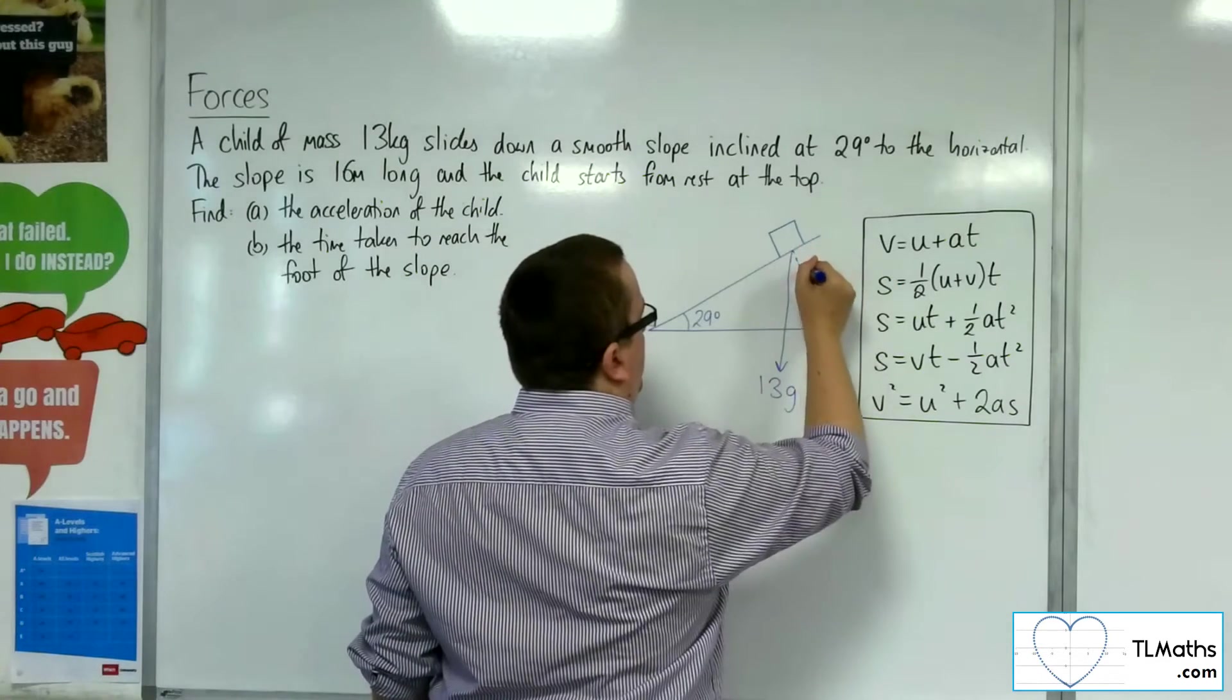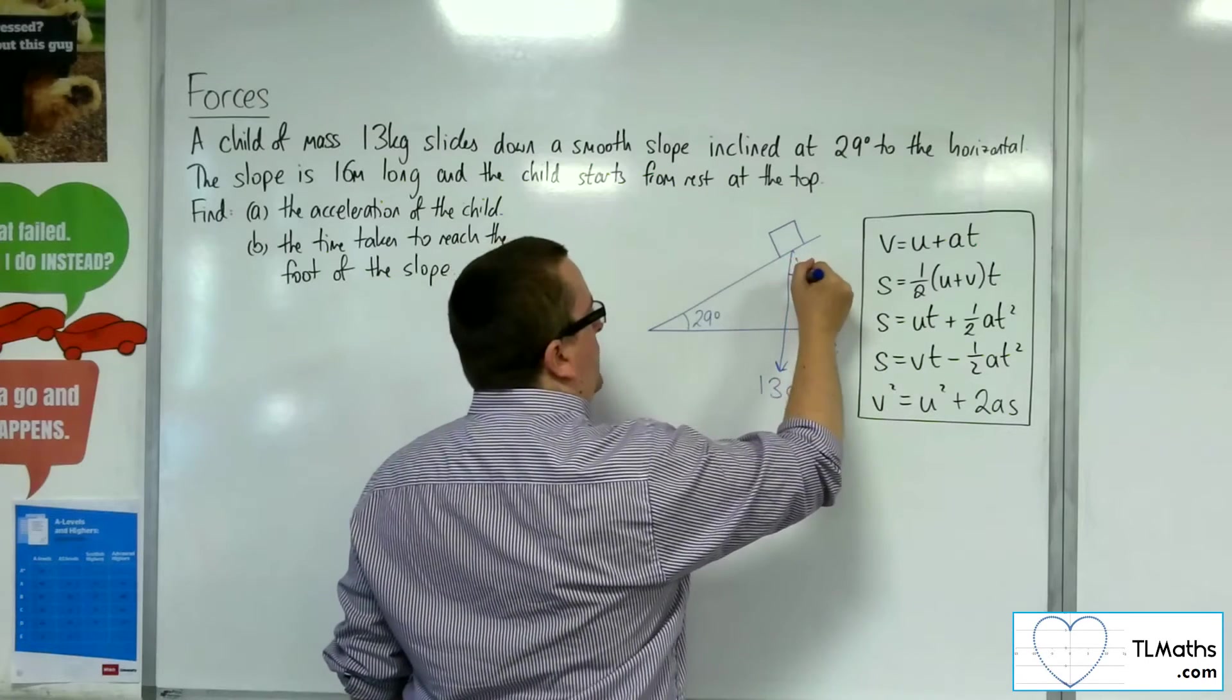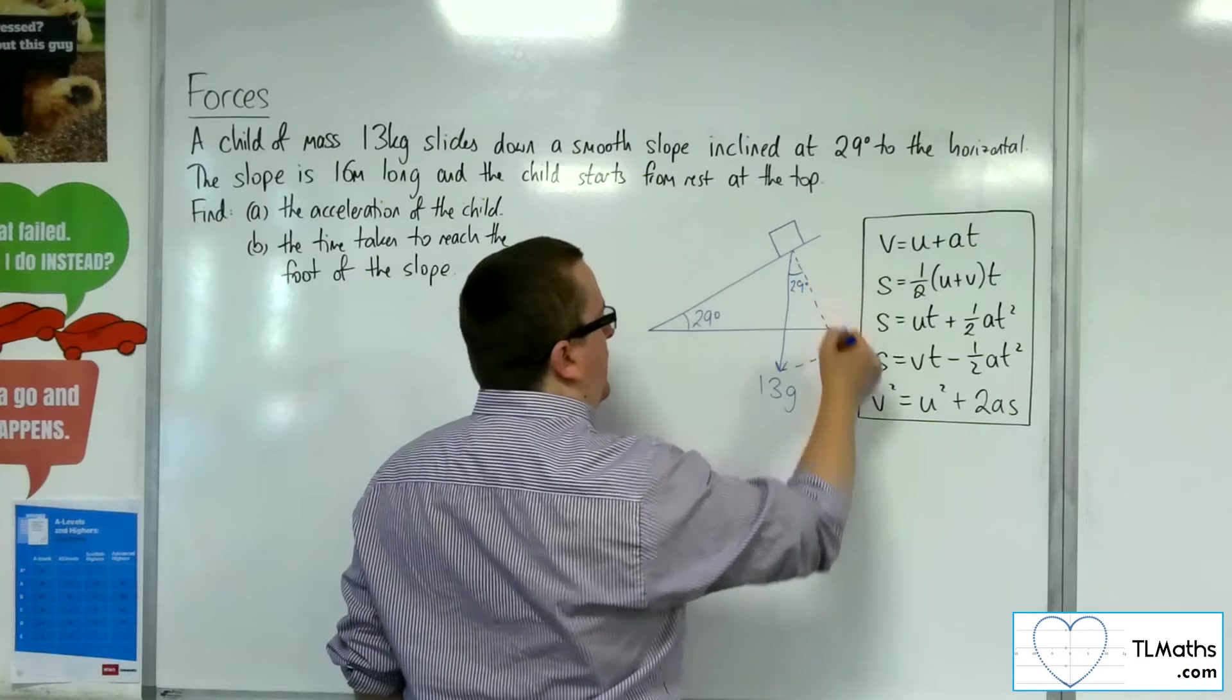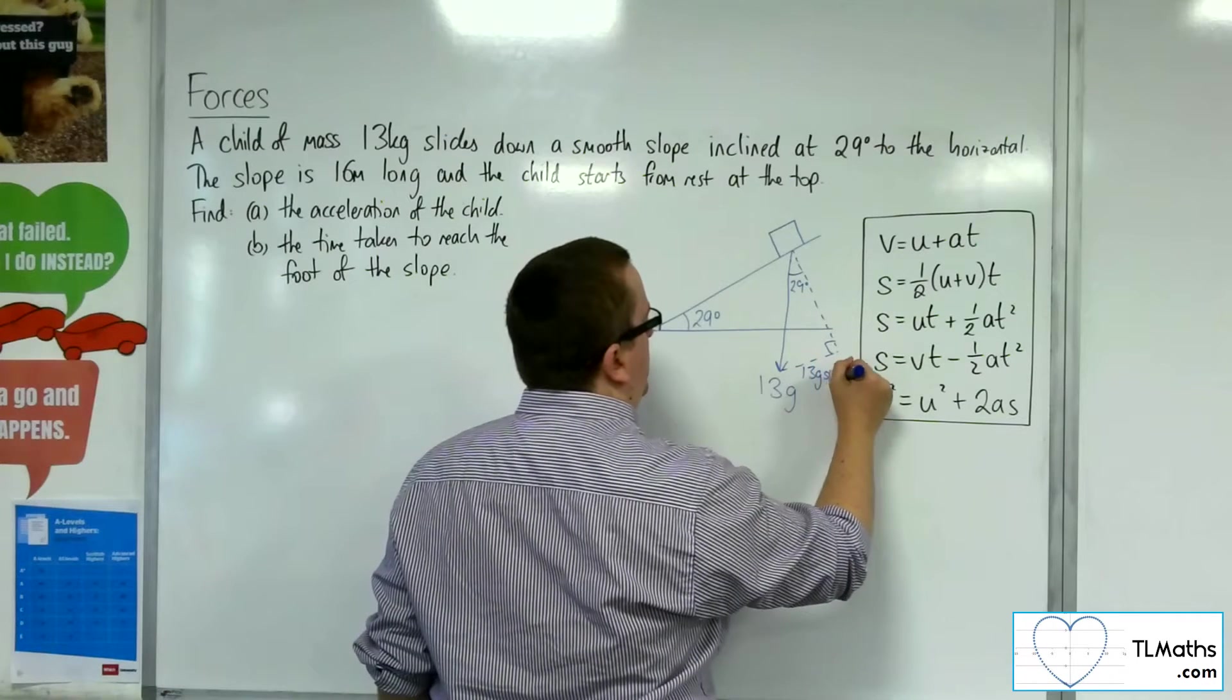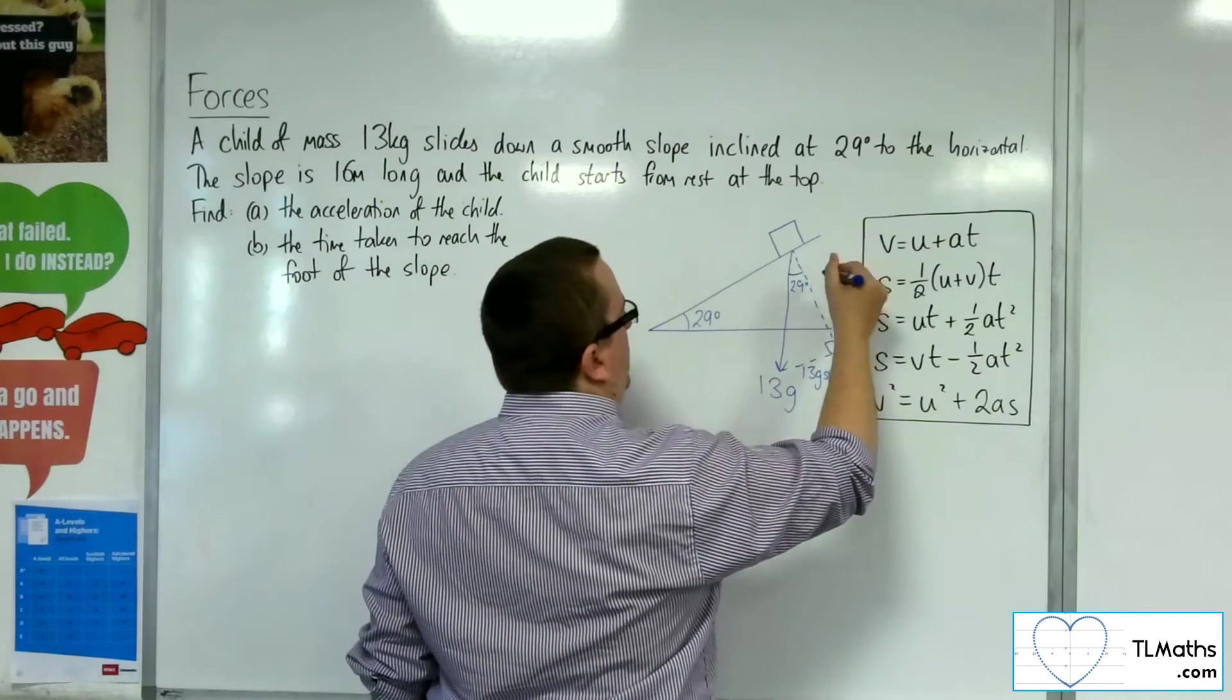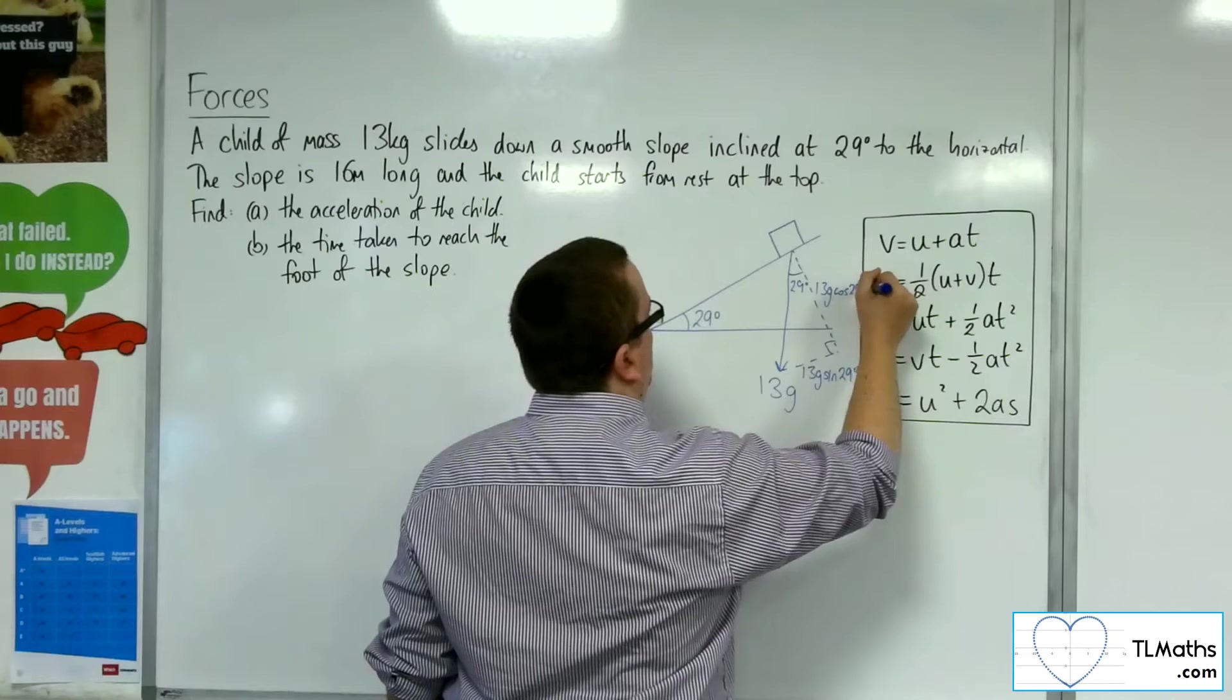And I'm going to divide that up into its component parts. So this angle is 29 degrees. So we've got the opposite side will be 13g sine 29, and the adjacent side, 13g cosine 29.